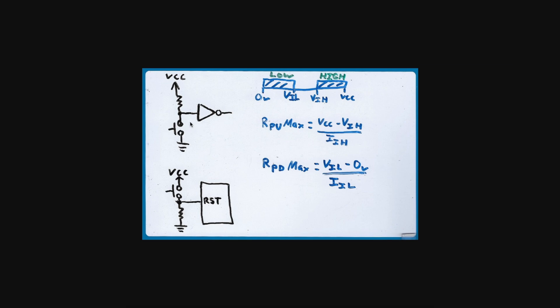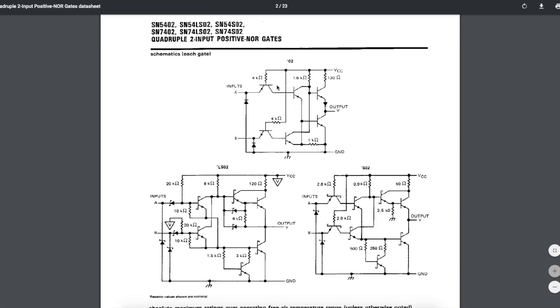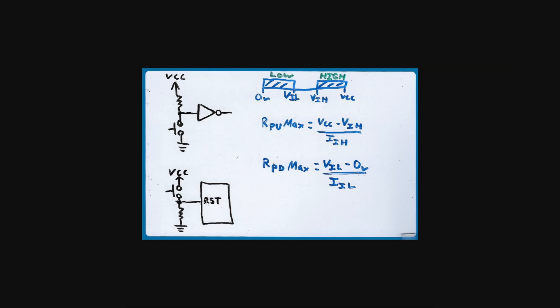When you're using a switch on the input of a logic circuit to be able to set the input either low or high when you push the switch, how do you determine the value of pull-up or pull-down resistor to use along with the switch?